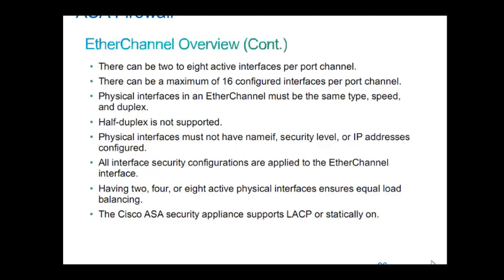On ASA, every interface has to be given an IP address. But when you bundle physical interfaces into a port channel, the interface is now logical, not physical. So you need not give an IP address to the physical interface. Make sure only the physical interface is given 'no shutdown' — it should be up. Go to the port channel interface, give the name, give the security level, give the IP address. Whatever you would do on the physical interface, now you do it on the logical port channel interface.